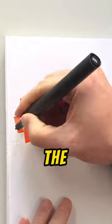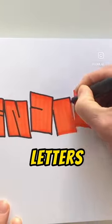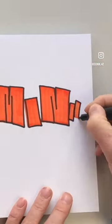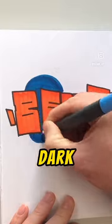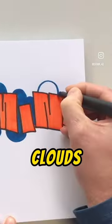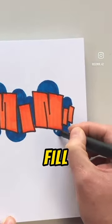Now it's time for the outline. I draw the holes in the letters as lines so that there are no spaces. I choose a dark blue background in the shape of clouds to create a hard contrast to the fill.